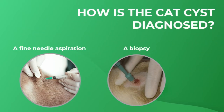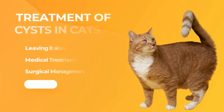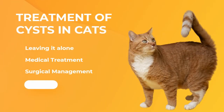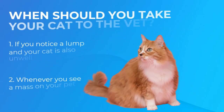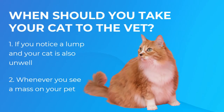How is a cat cyst diagnosed? Through a fine needle aspiration or a biopsy. Treatment of cysts in cats includes leaving it alone, medical treatment, or surgical management. You should take your cat to the vet if you notice a lump and your cat is also unwell, or whenever you see a mass on your cat.